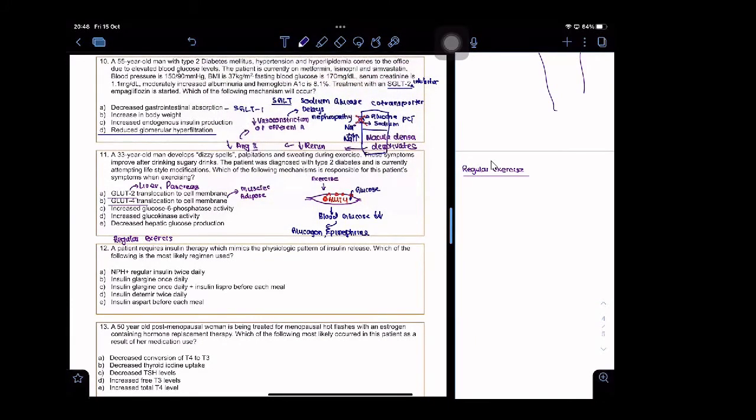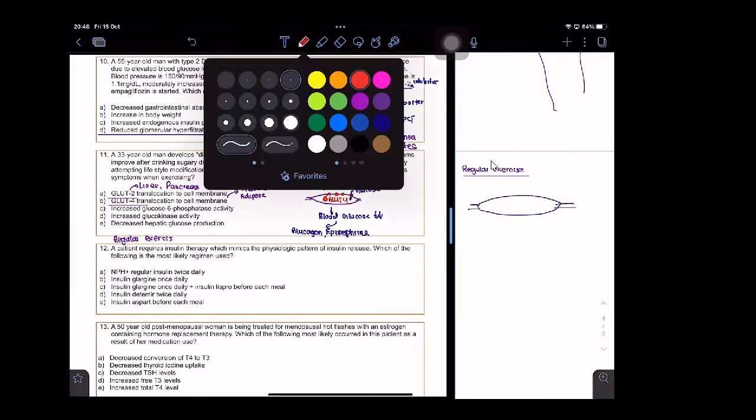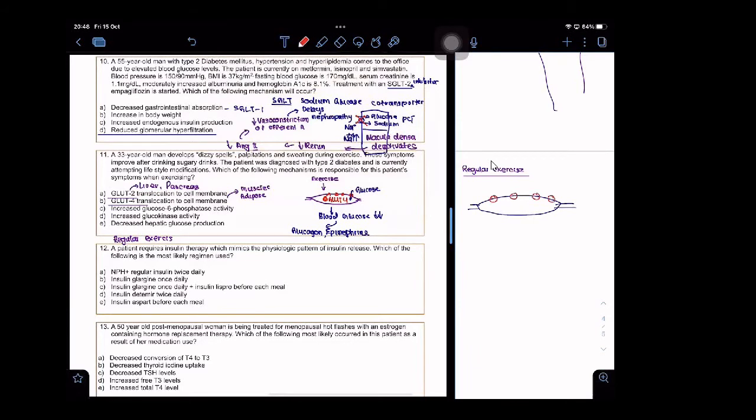When a person is regularly exercising, the muscles will have sent a constant amount. They will have sent an increased amount of GLUT4 to the surface. So, if you compare a person who is not exercising and a person who is exercising, they will have a lot of GLUT4 receptors in their muscle cells. That means blood glucose, the glucose in blood will be low. Do you get this?